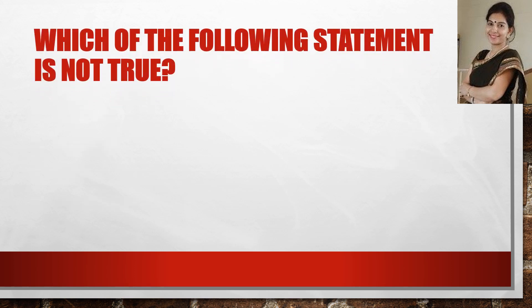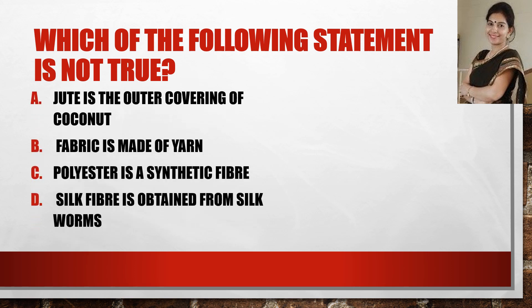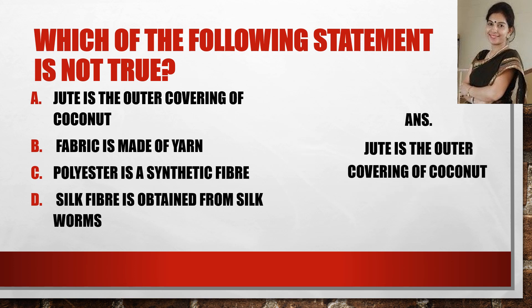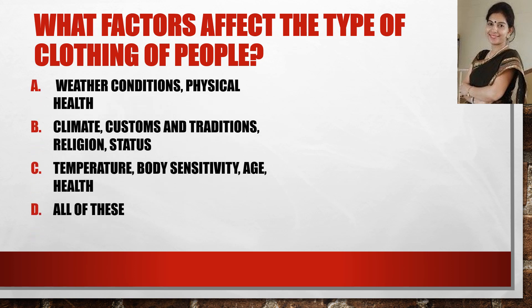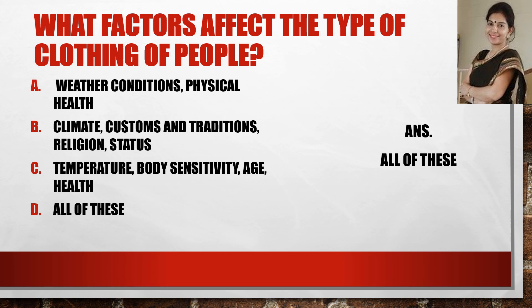Which of the following statements is not true? These are the different statements — you have to read them carefully. The answer is: jute is the outer covering of coconut — no, that is not true. What factors affect the type of clothing of people? The correct answer is all of these.